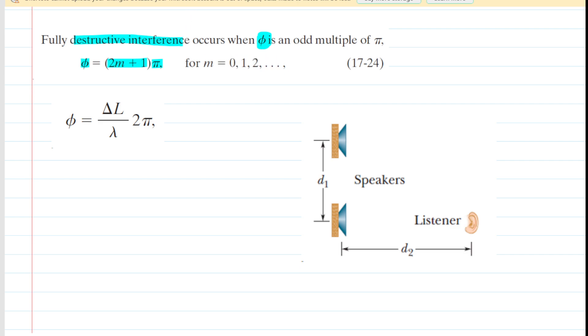Now we need to talk more about that phase difference phi. The phase difference is given by this equation here, where we have the so-called path length difference divided by the wavelength of the sound source times 2 pi. Let us talk about that delta L, the path length difference.